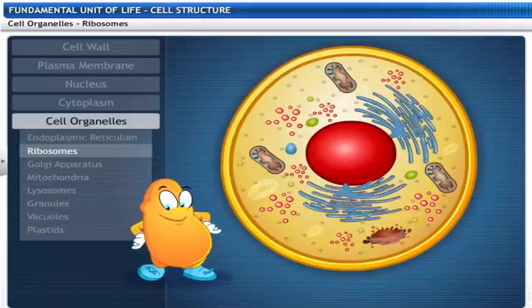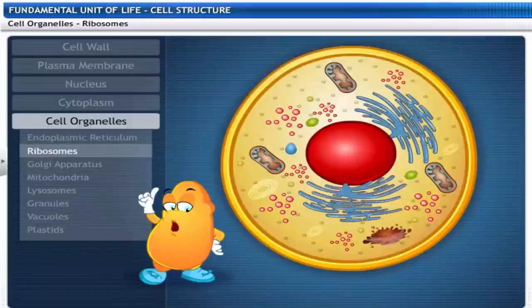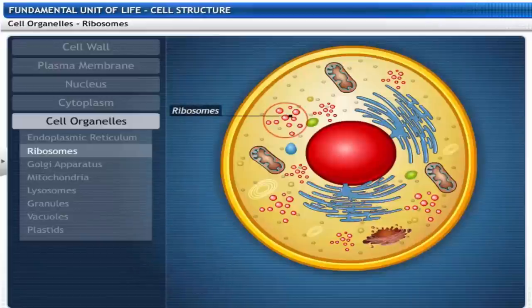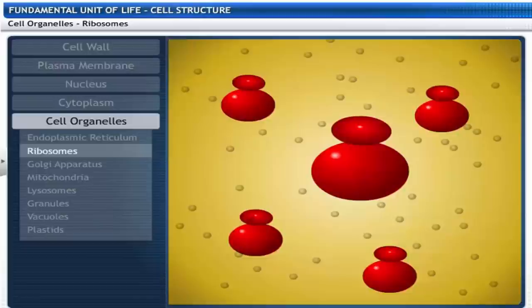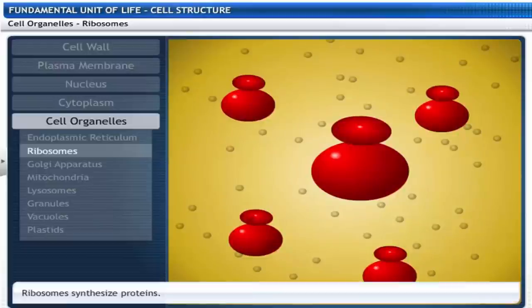Do you know what these small spherical granules are? These are ribosomes found scattered in the cytoplasm or attached to the outside of the endoplasmic reticulum. These are naked and have no membrane. Ribosomes synthesize proteins.